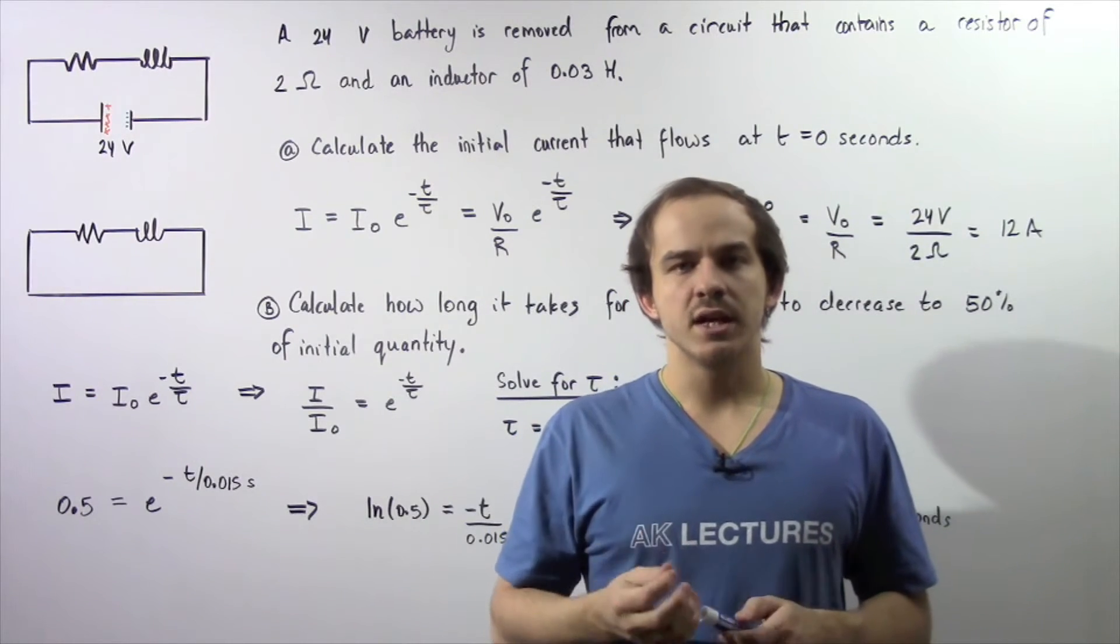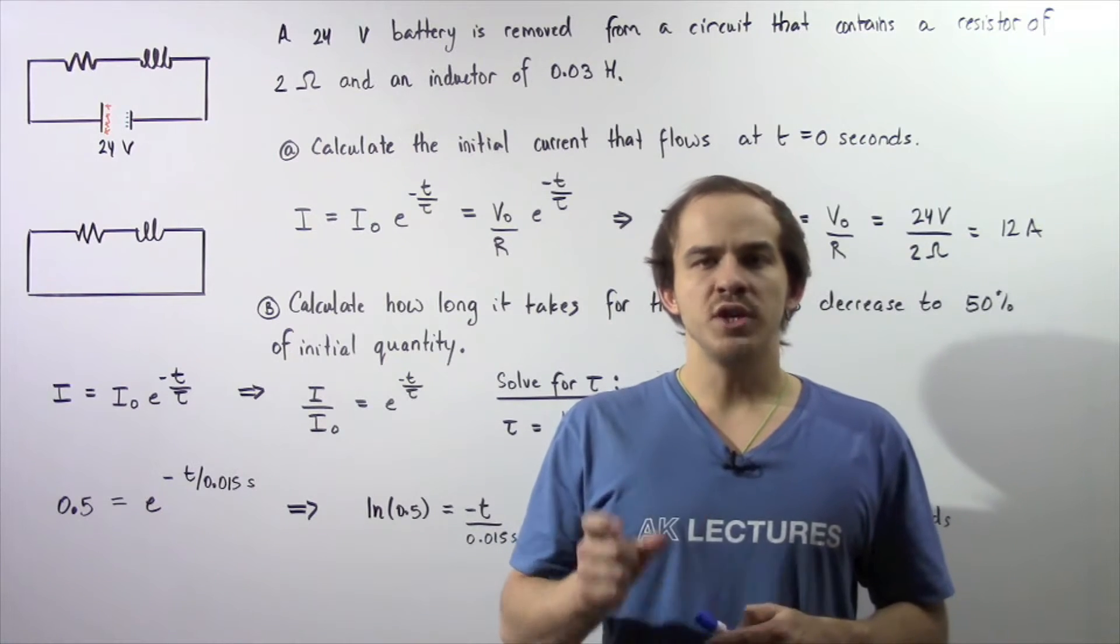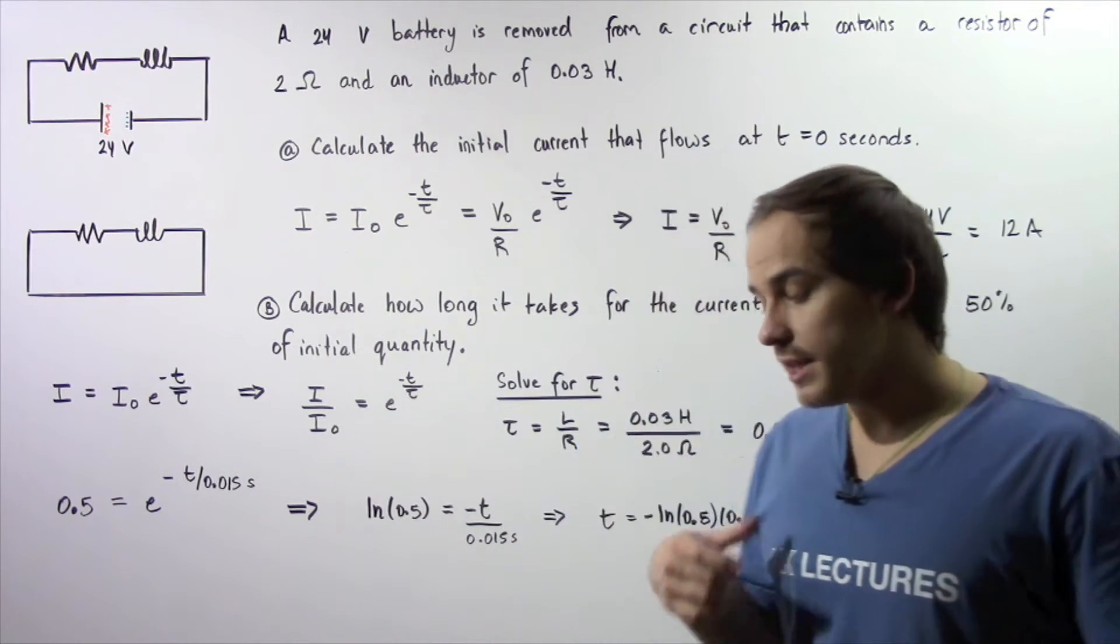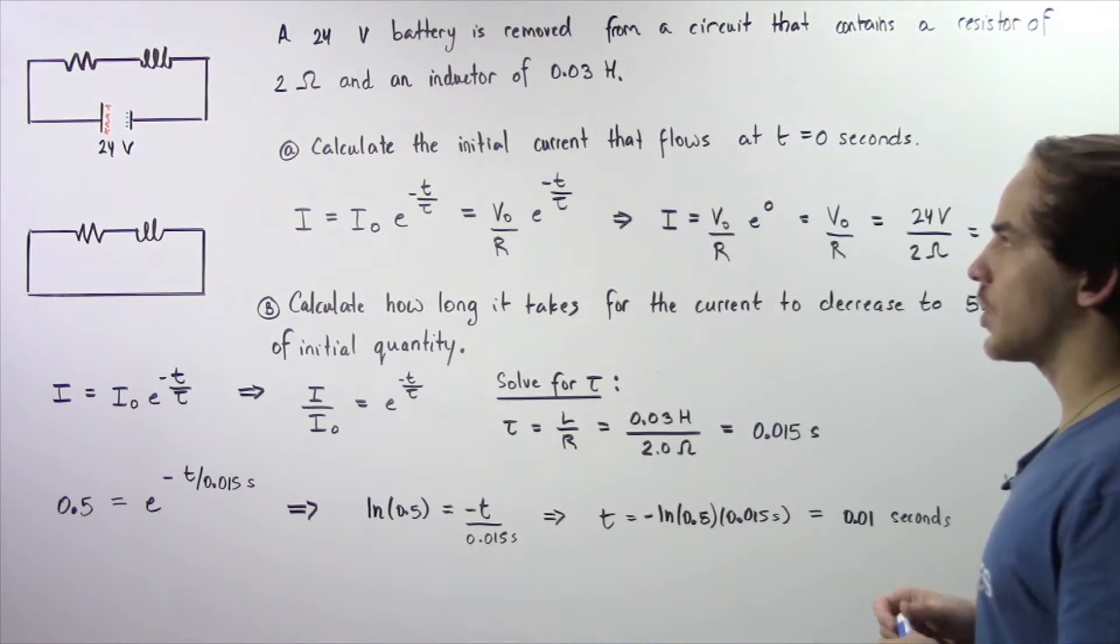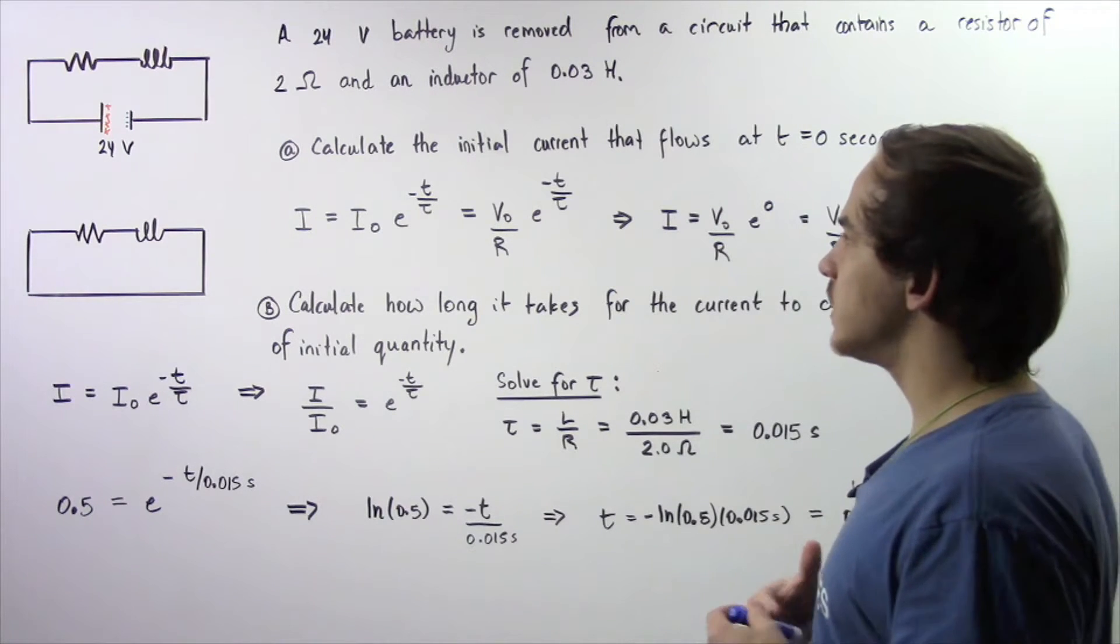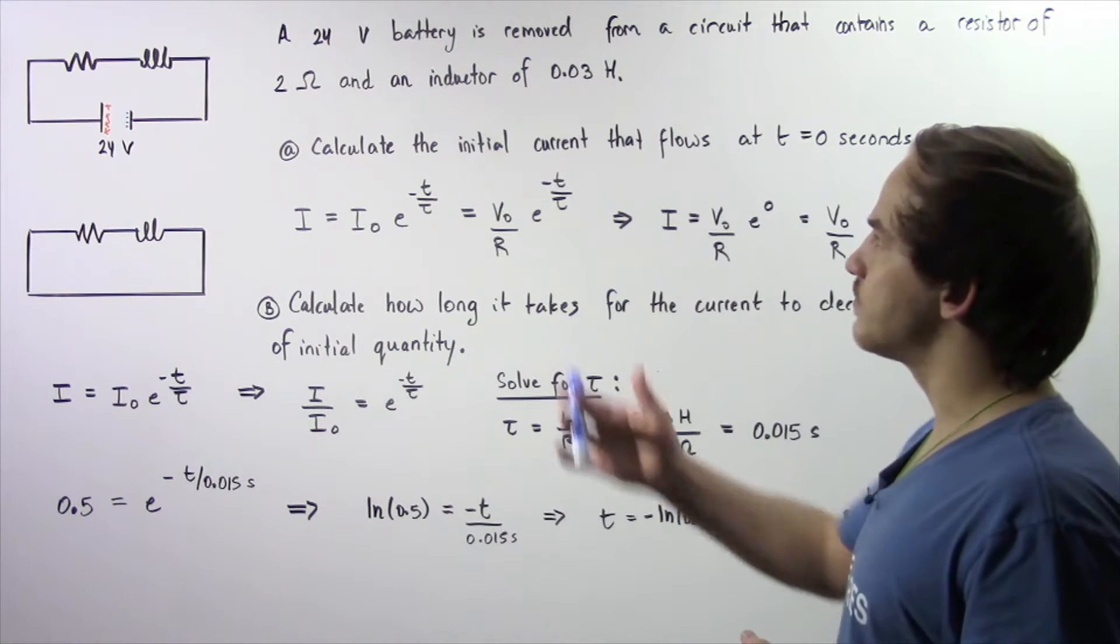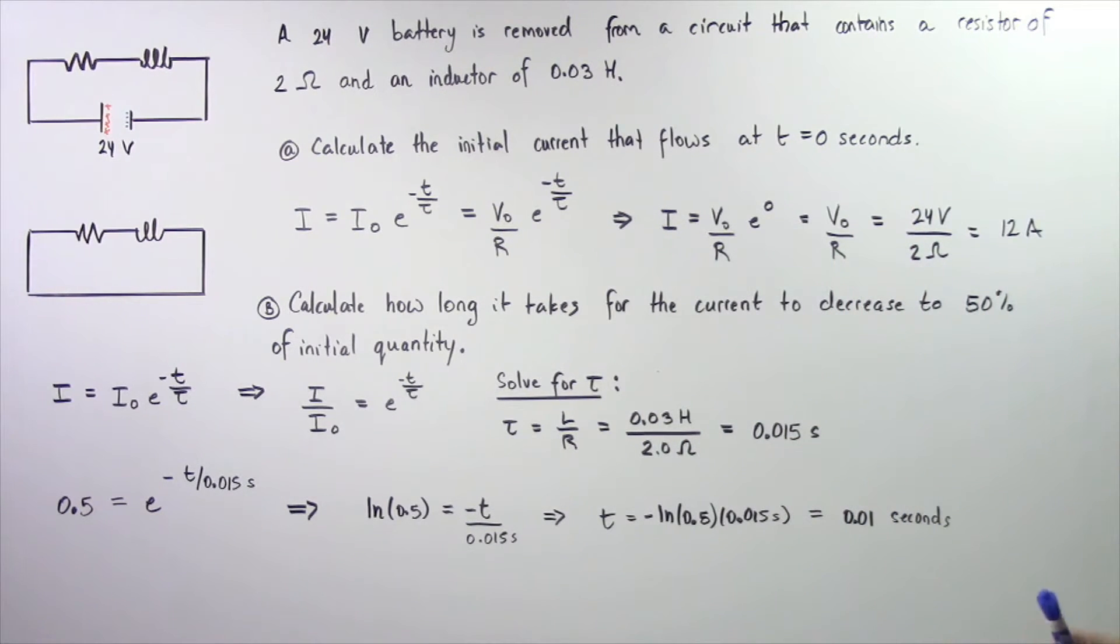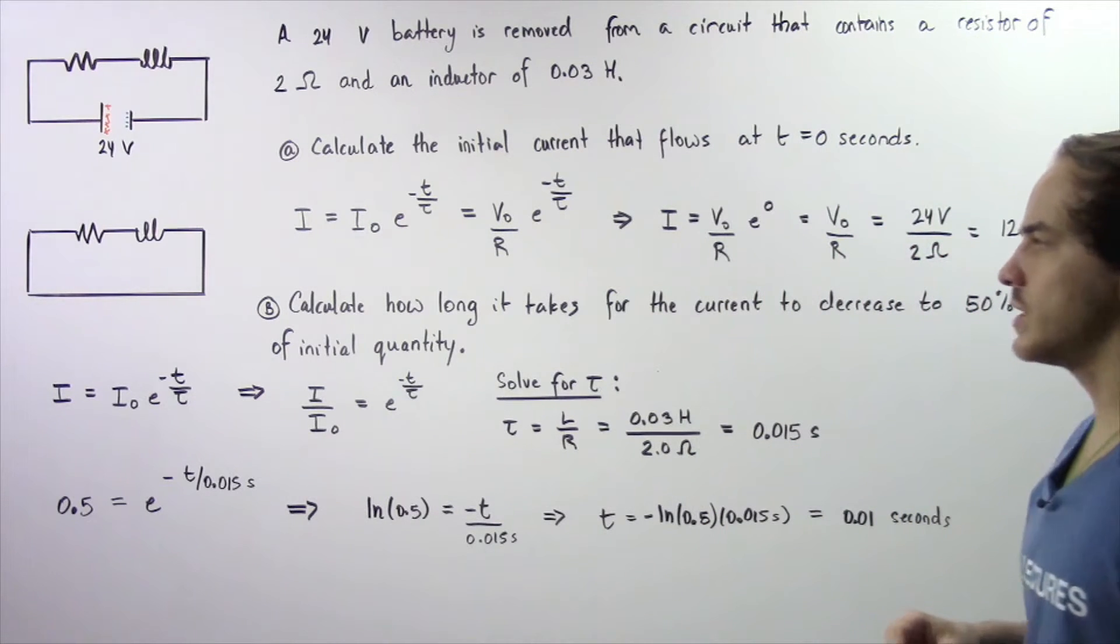In the previous lecture, we discussed what happens inside an LR circuit when we remove our battery from the circuit. We discussed the equation that gives us the rate of change of our electric current I. Now let's look at the following application in which we're going to use that equation. Suppose a 24-volt battery is removed from a circuit that contains a resistor of 2 ohms and an inductor of 0.03 henries.